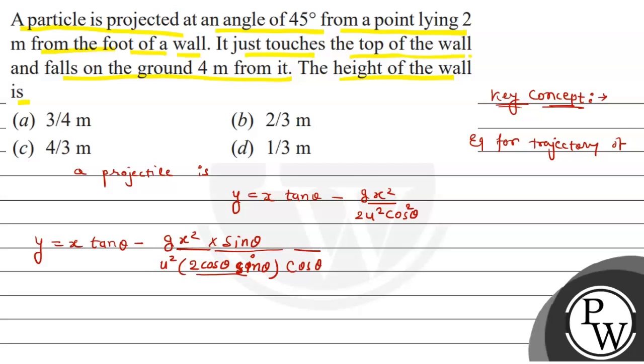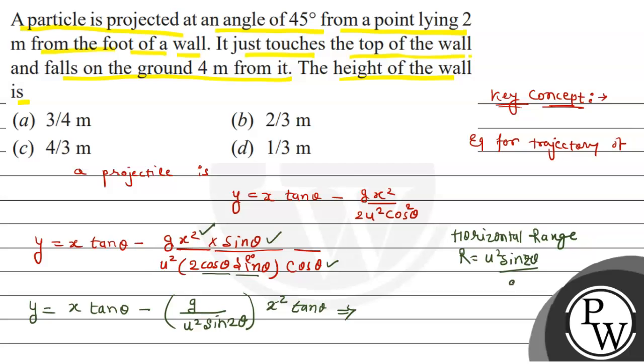We can write y equals x tan theta minus g upon u squared sin 2 theta times x squared tan theta. You know the horizontal range formula is u squared sin 2 theta upon g. So the inverse gives us g upon u squared sin 2 theta equals 1 by R.